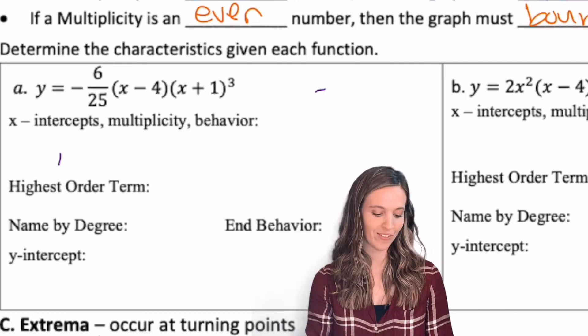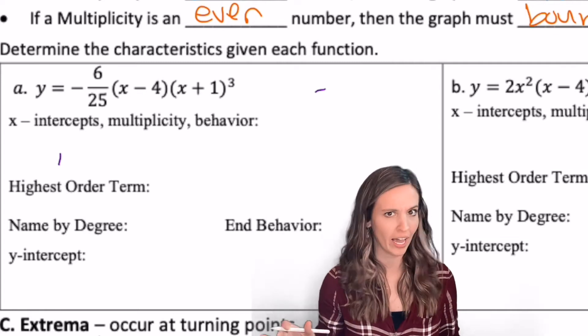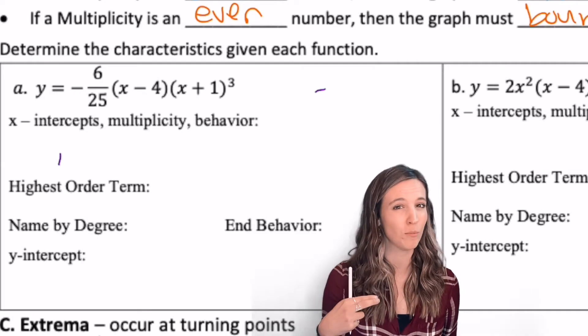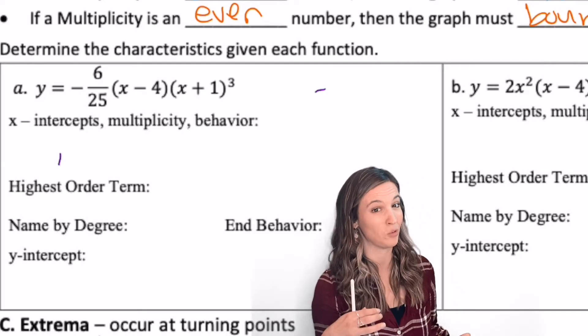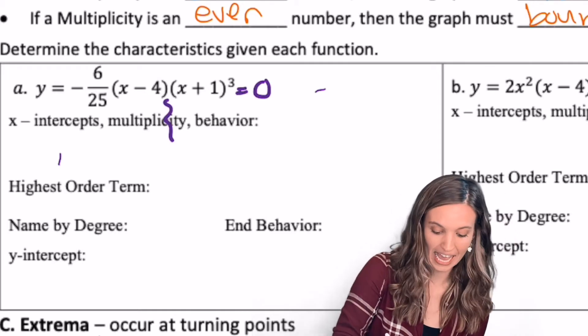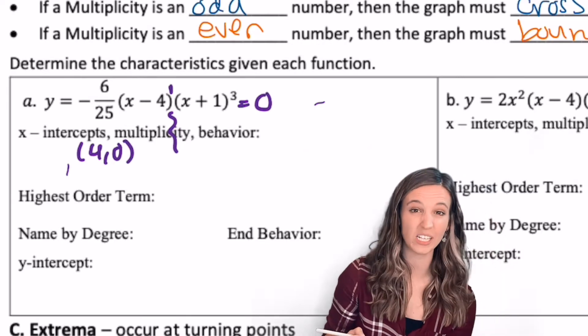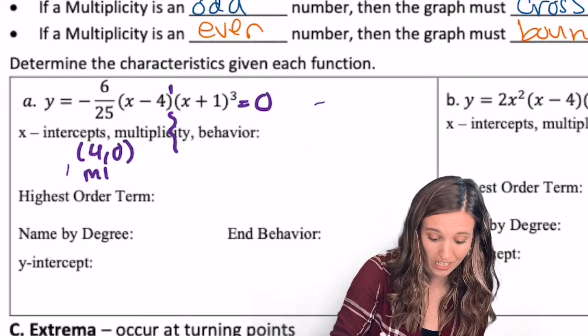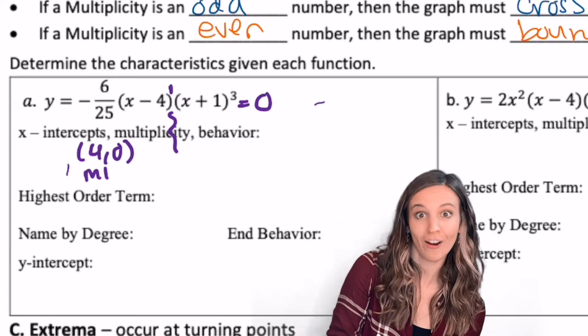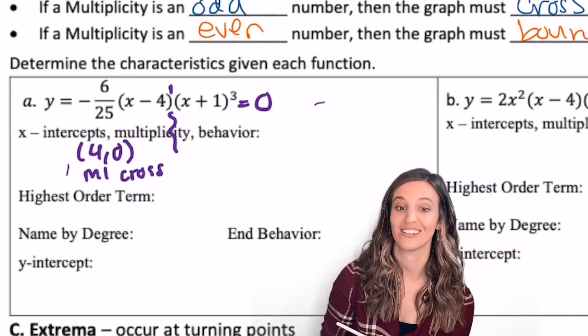Y equals negative 6 25ths times x minus 4 times x plus 1 cubed. Let's see what we know about this polynomial. We want to find the x-intercepts, state the multiplicity, and what's going to happen because of that multiplicity. X-intercepts, I can just use zero product property and get one of my x-intercepts is 4, 0. That one has just an exponent of 1, so we know its multiplicity is 1. Therefore, I'm going to cross at 4, 0 because my multiplicity is odd.